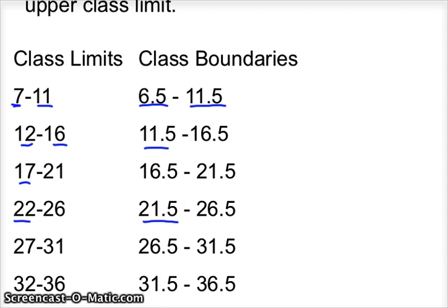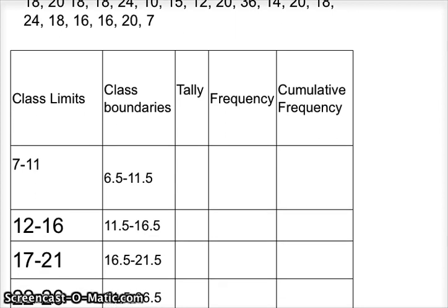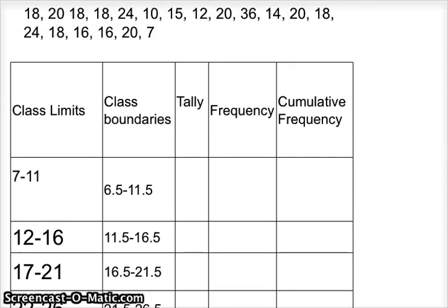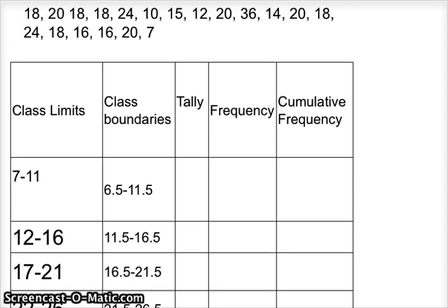Once we've set up our classes, it's time to go ahead and set up our frequency distribution table. I've got my class limits, my data, my class boundaries. What we'll do is tally this information. Go back to kindergarten a little bit when we used to tally how many teeth we lost. From 7 to 11, I'm going to mark them off and tally. There's one 7. I see a 10, so there's another tally mark. That might be it.